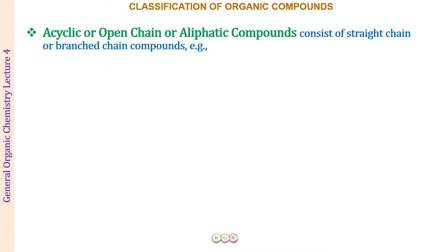Let us first understand the acyclic compounds. Acyclic compounds are also called open chain compounds or aliphatic compounds. Open chain means that when the carbon atoms are joined to each other — we have studied the property of catenation, that carbon has a self-linking property and can form long chains — the terminal carbons, the first carbon and the last carbon atom, they will not be directly linked to each other. These compounds essentially consist of straight chain or branch chain compounds.